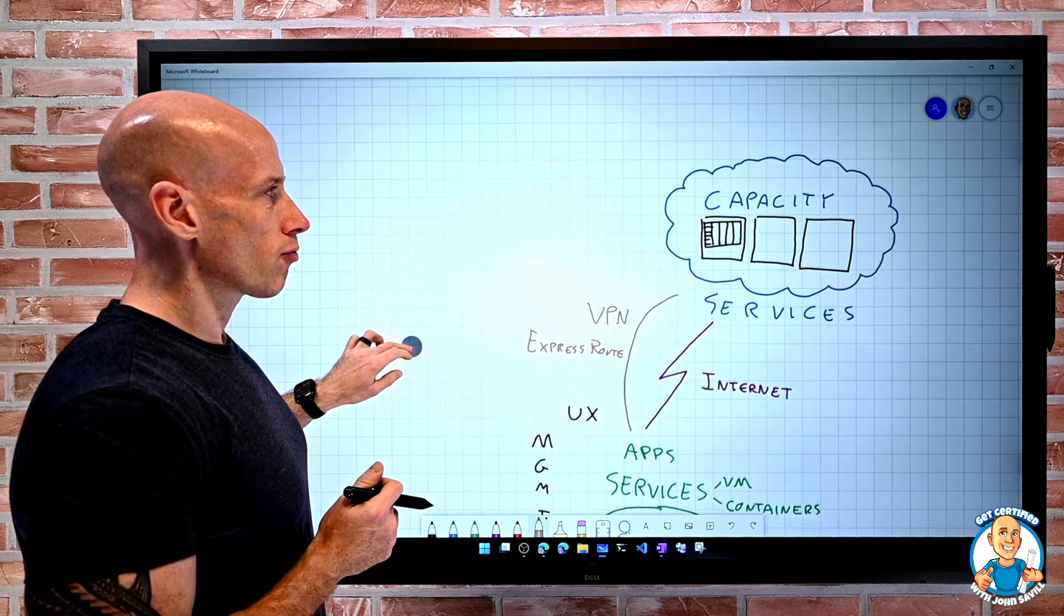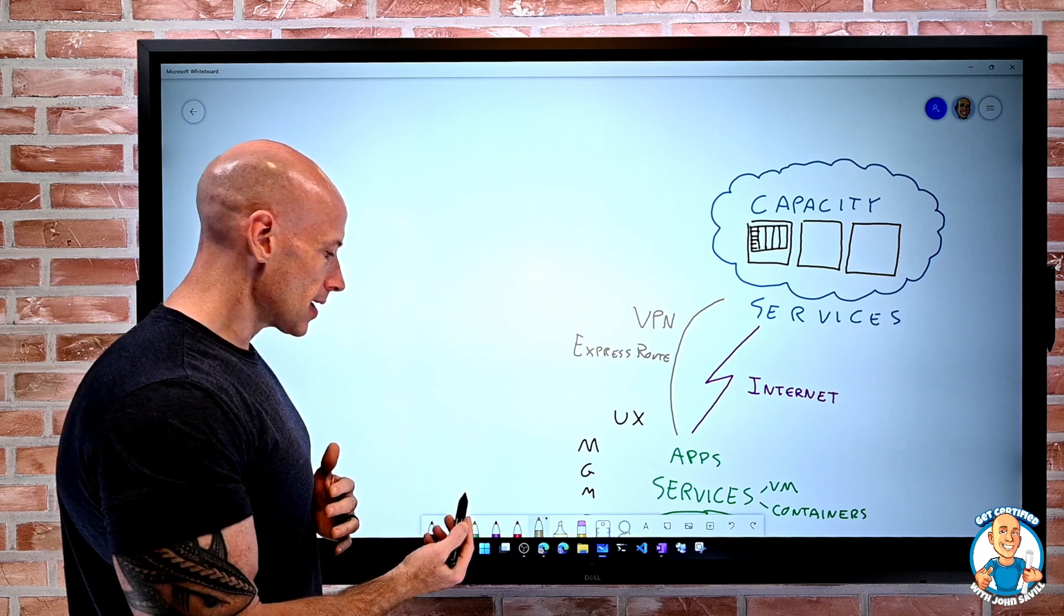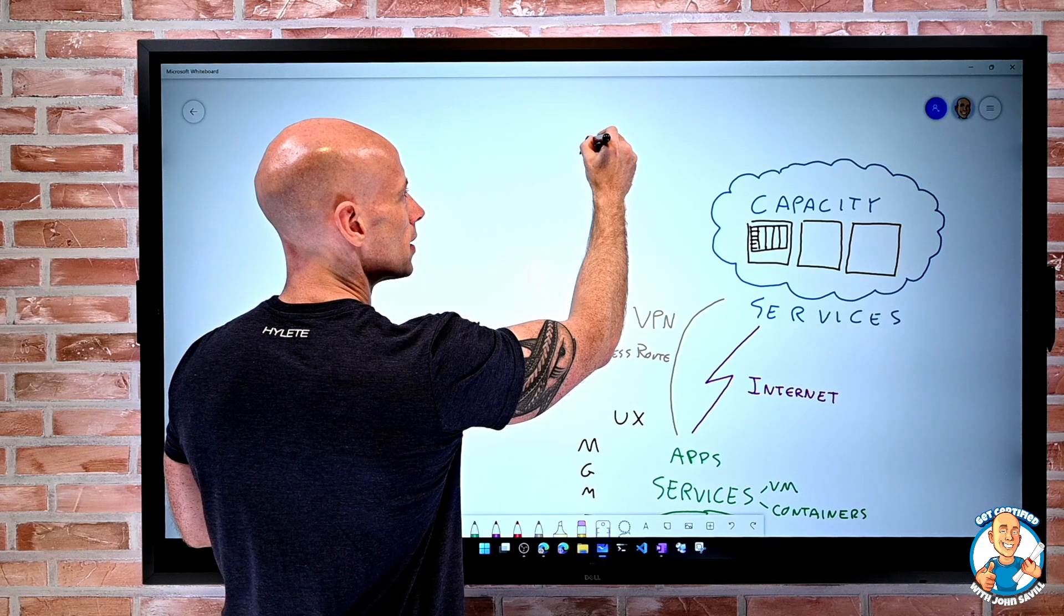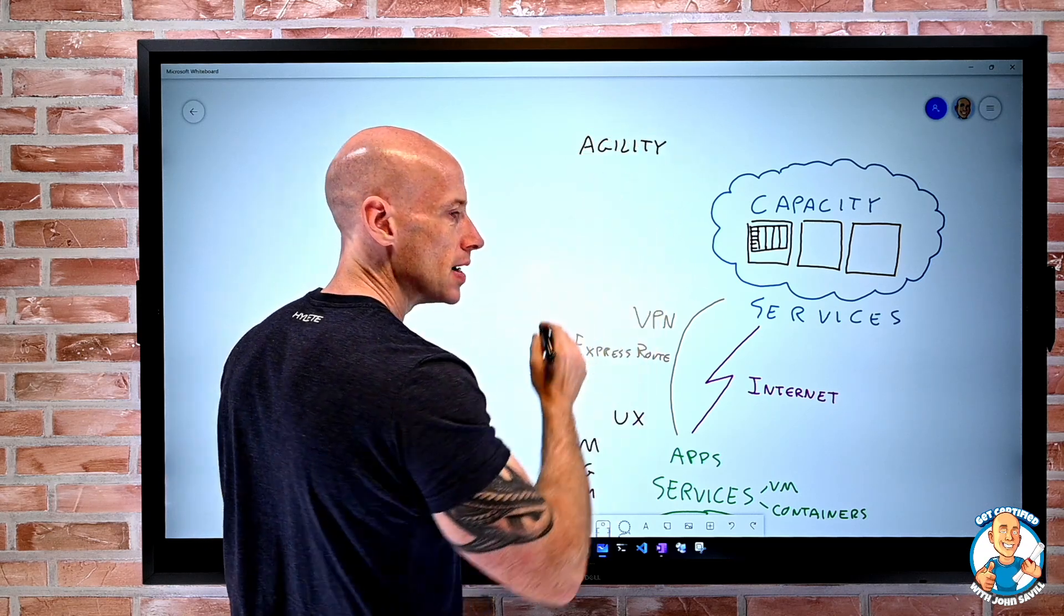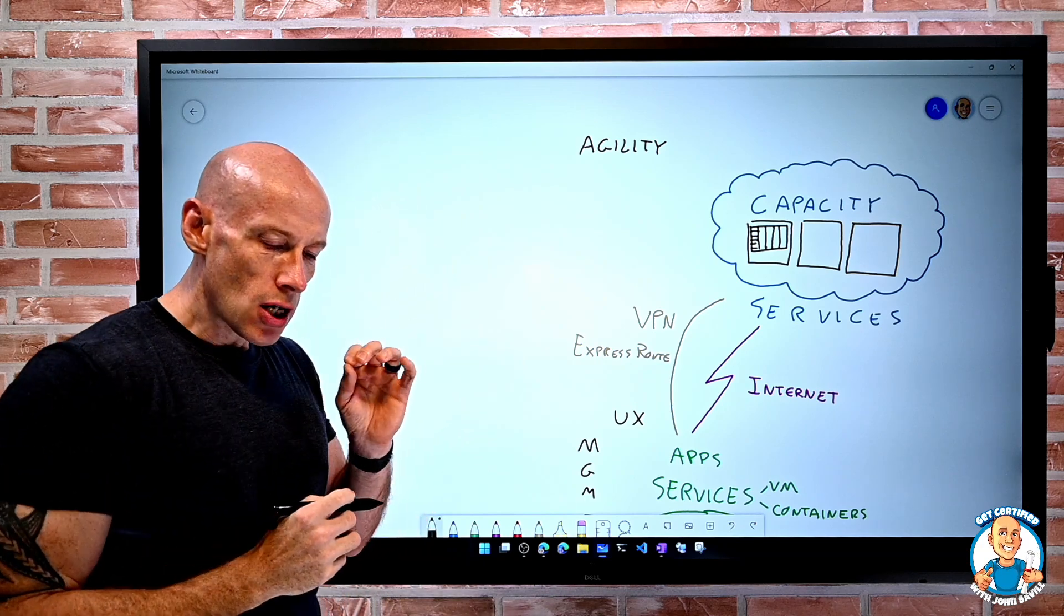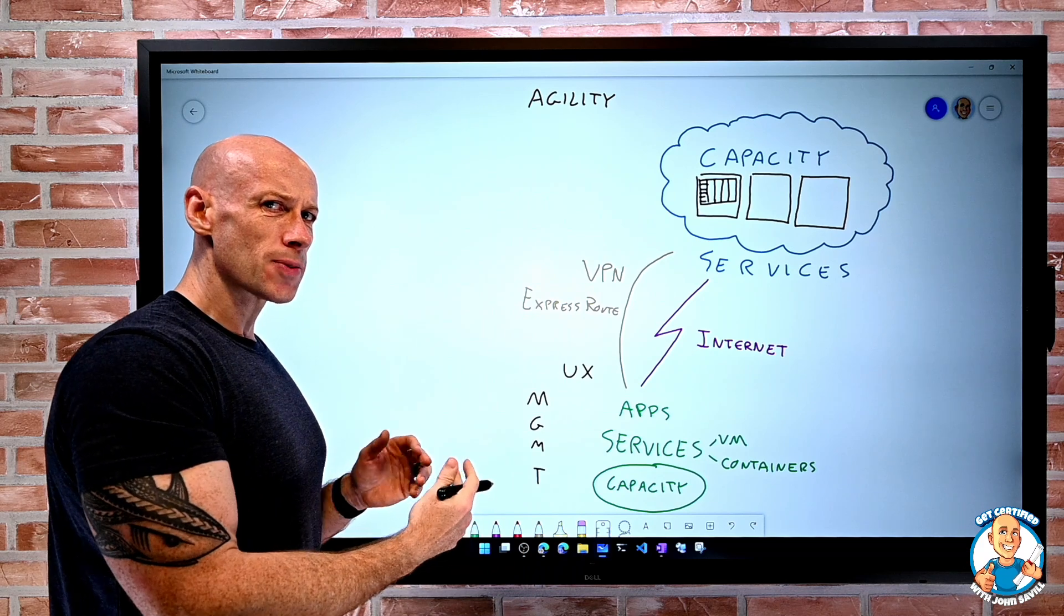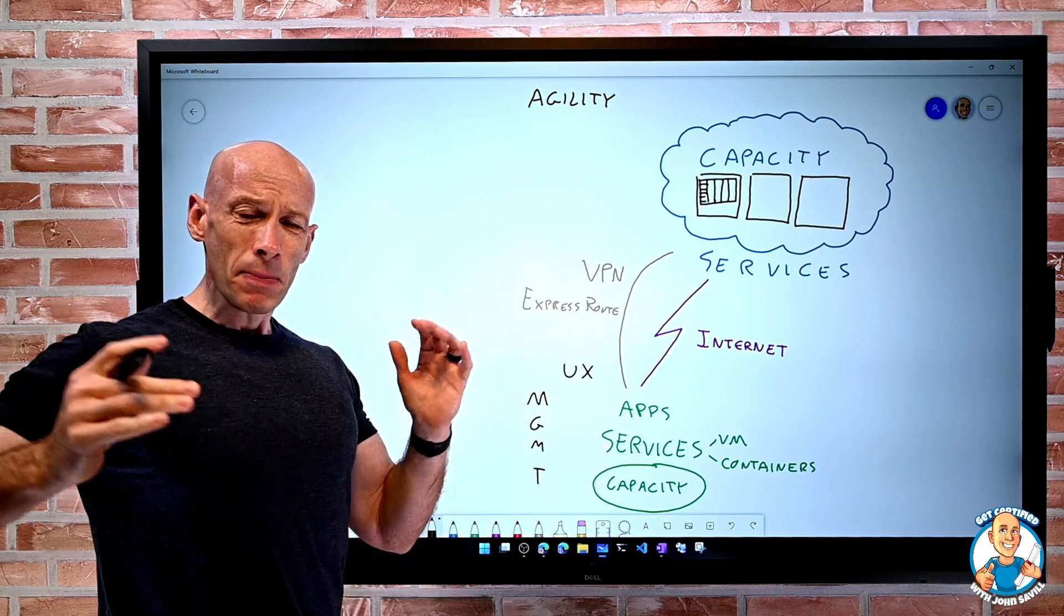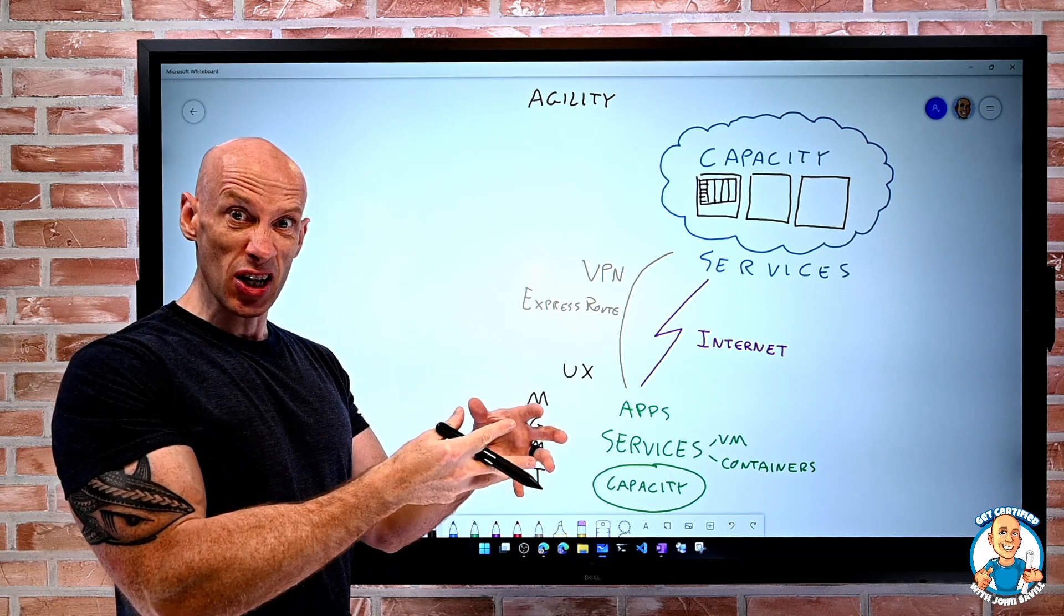So let's think about for a second, if I'm using the cloud, some of the key benefits I'm going to get. Well, firstly, I get agility. Agility because on-premises, I have to really think a long way in advance about what I'm going to use so I buy the right hardware, I rack it the right way. And then really, I'm stuck with it. It has a certain lifespan for that piece of equipment I've purchased.